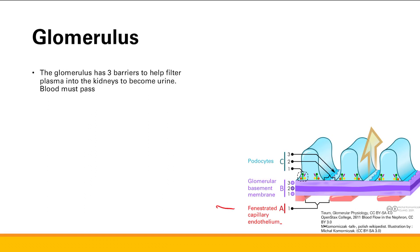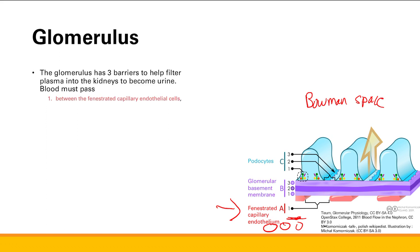Let's look at this picture. We have our blood and our plasma, and it has to pass through multiple barriers to get into the Bowman's space of the nephron. The first barrier is the fenestrated capillary endothelium. This refers to the little spaces between the endothelial cells of the capillary, where different particles and plasma can filter through.